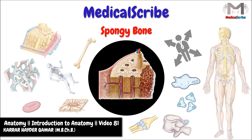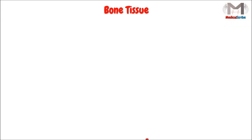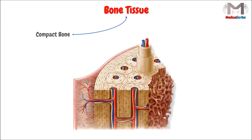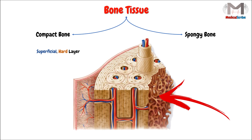Hello everyone in Medical Scribe. I'm Karar Haidar, a doctor graduated from Baghdad Medical College. We knew from the previous videos that the bone tissue is of two types: compact bone and spongy bone. The compact bone forms the superficial hard layer of the bone, and inside it there is a bony mass which is the second type of bone tissue, the spongy bone, and today our talking would be about this type.